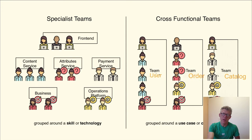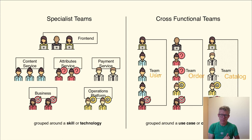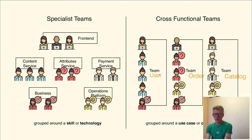How do we speed up development? In the old days, we had specialized teams grouped around our skills — a frontend team, a business team, a payments team, an order team, and backend developers. Nowadays it's better to have cross-functional teams grouped around a use case or customer need. For example, a team 'user' specializes in building the user vertical. This team consists of frontenders, backenders, and testers, all focused on the user vertical, which contains micro frontends and microservices together.